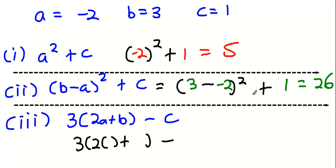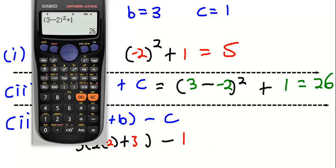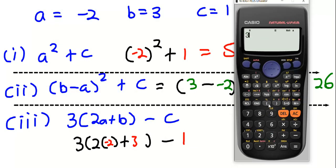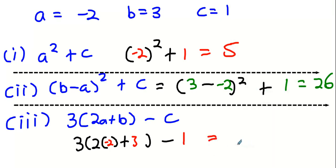Last one. Replace A with minus two, replace B with three, replace C with one. Go to your calculator again. Three times two bracket minus two plus three take away one. And you get an answer of minus five.